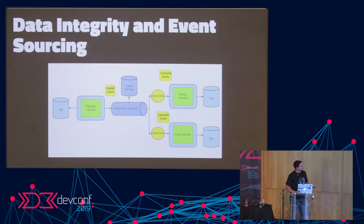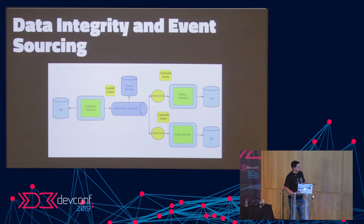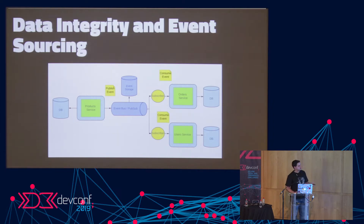This is what an event bus architecture looks like. We have our product service and order service with separate databases. If a product goes out of stock, we publish an event from the product service, which gets consumed by the event bus — say Google Cloud PubSub. An important step is to store that event in some sort of storage database, because if your subscriber fails to get it, you still have redundancy and can replay it. Your order service has a subscriber that consumes the event and updates its relevant database — so it knows this product is out of stock and won't accept more orders for it.